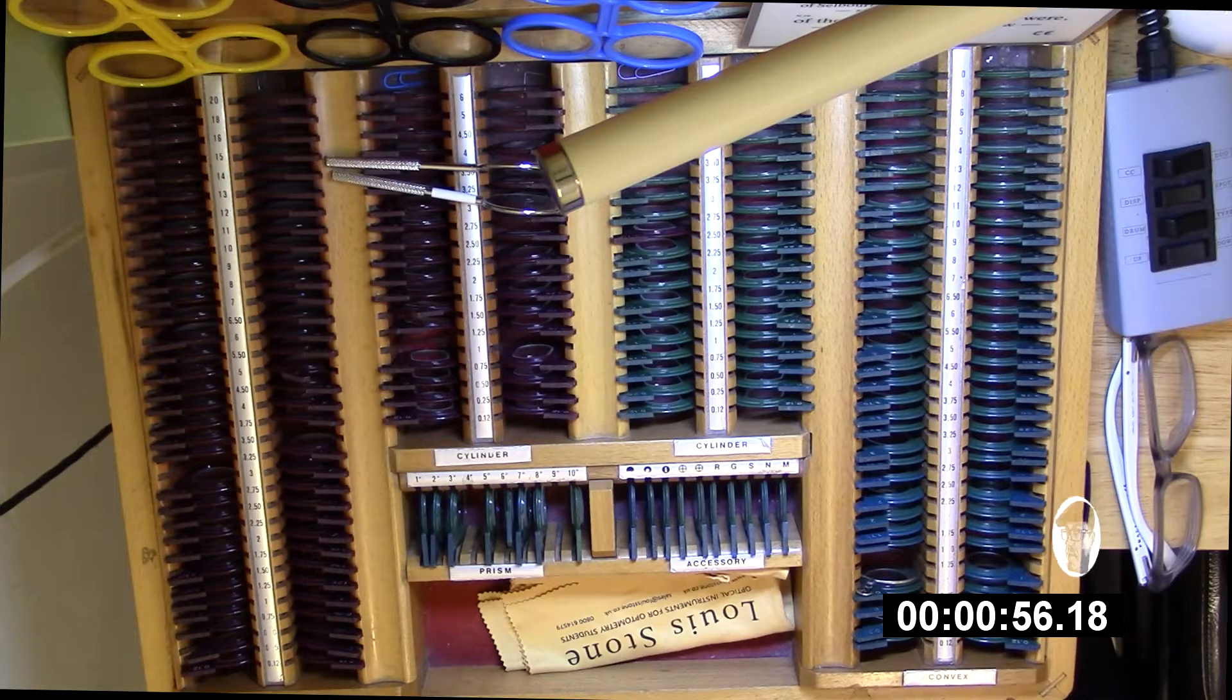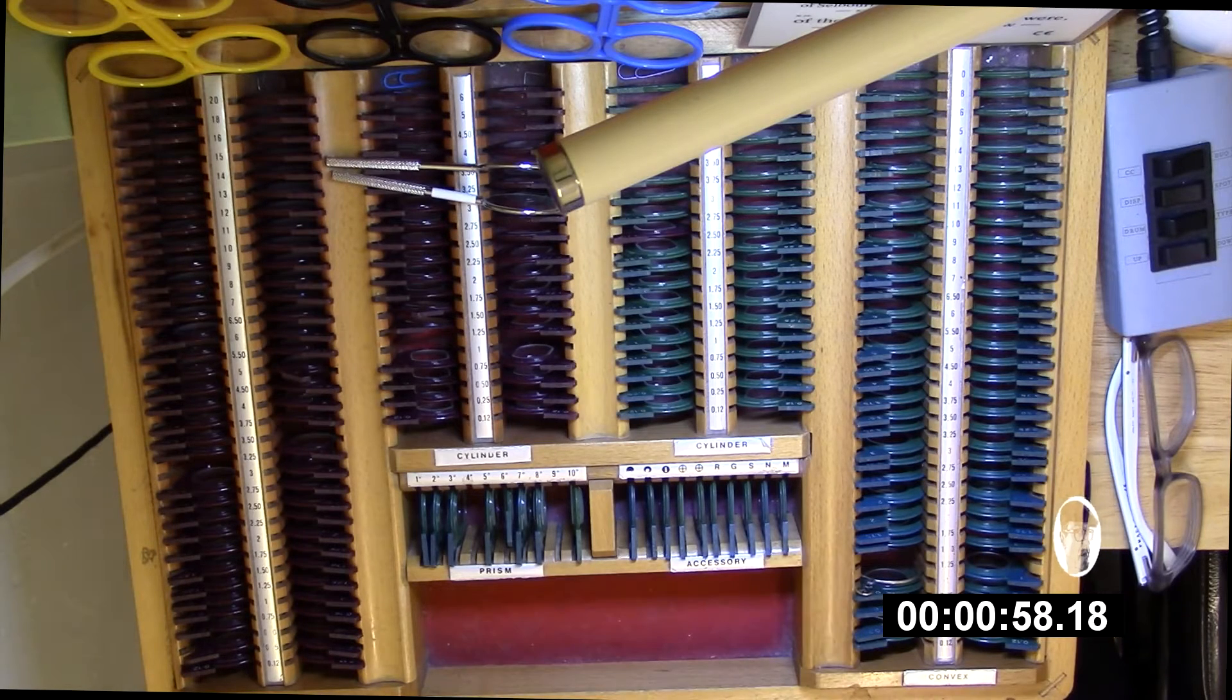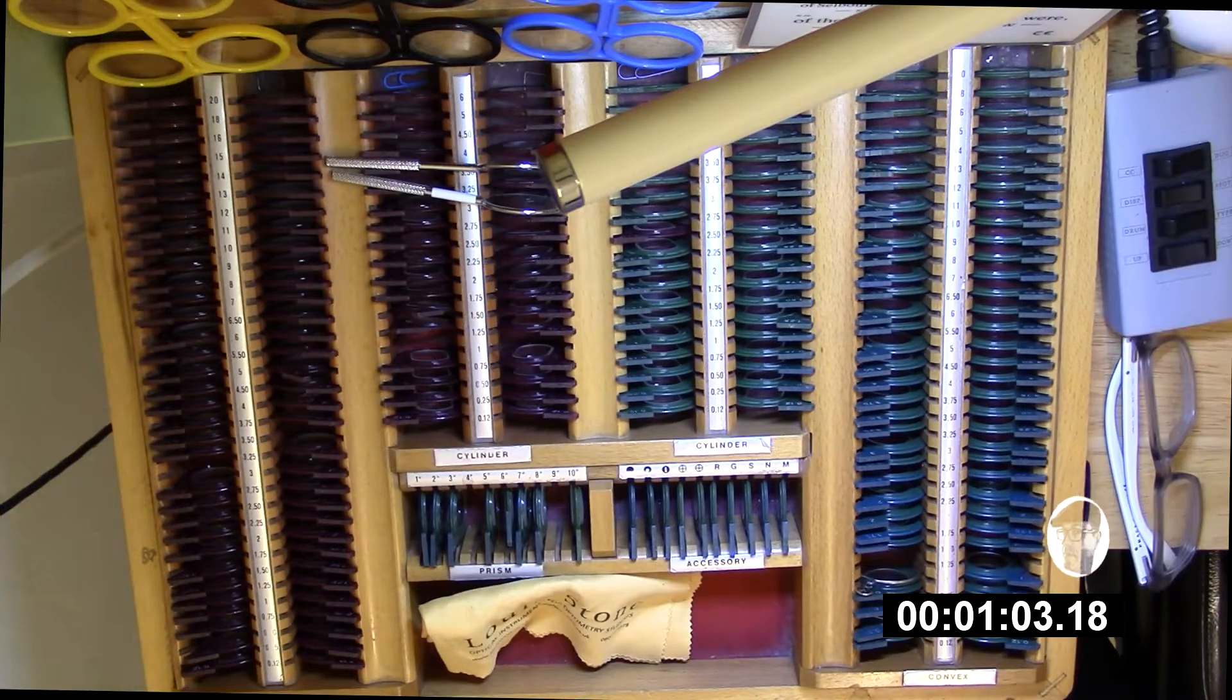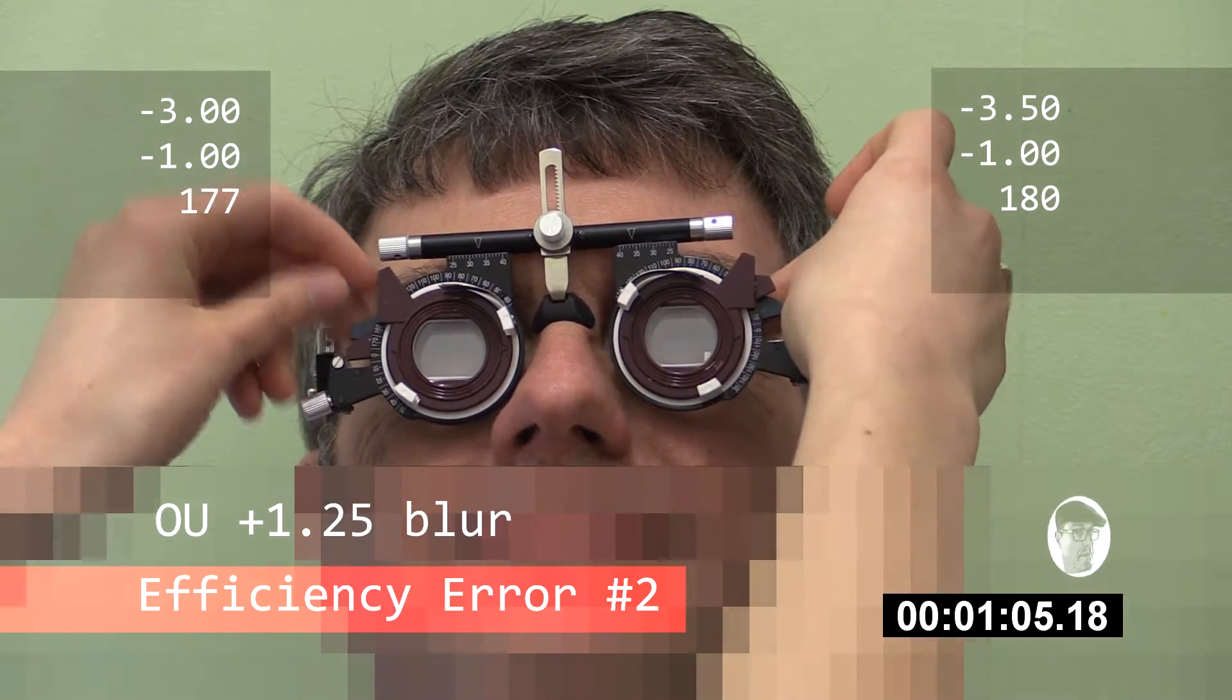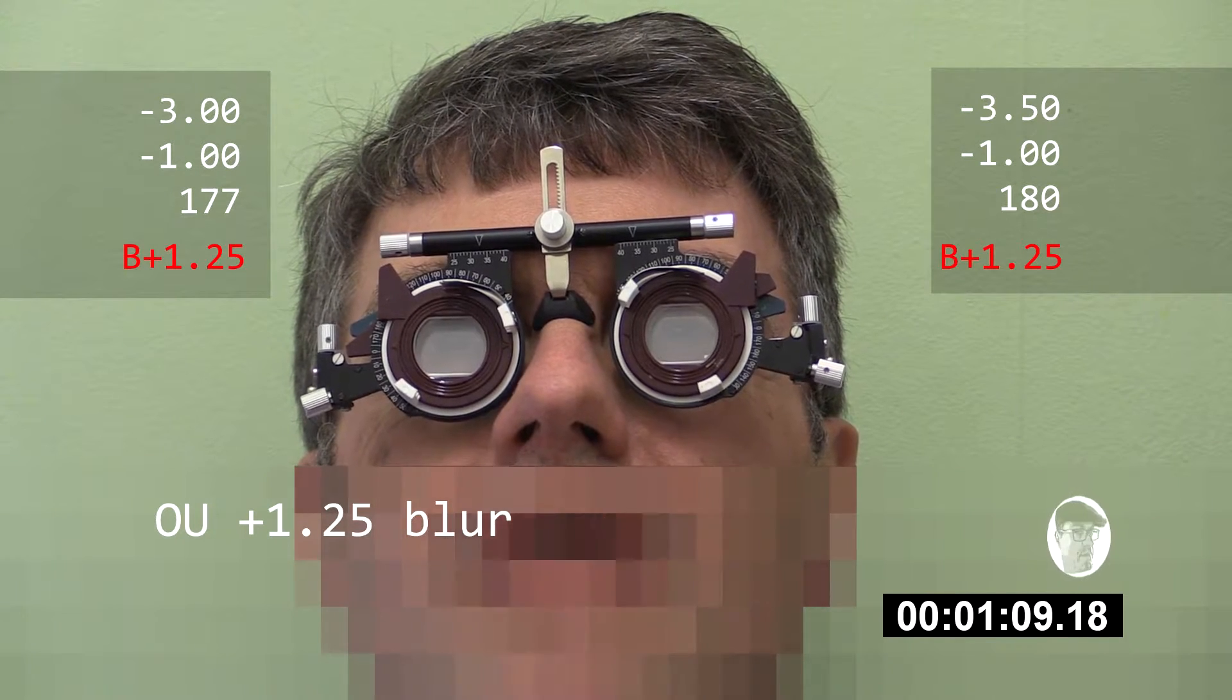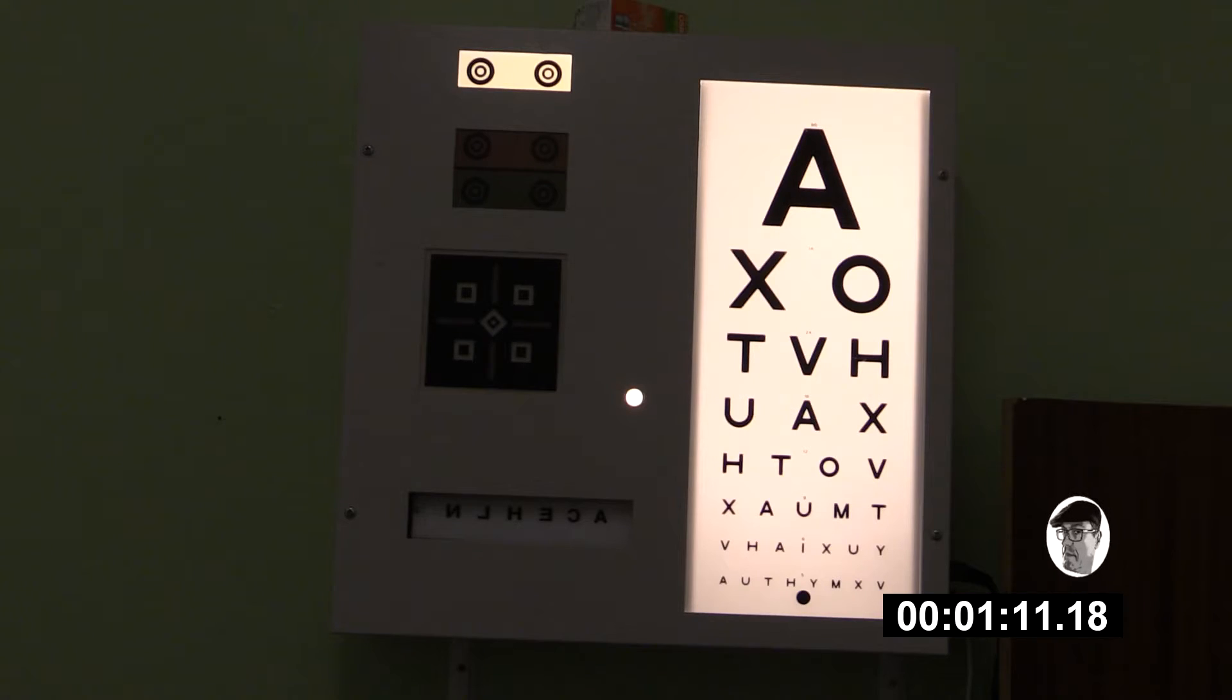And this time I'll attempt to do my binocular balance, so you can see the difference between the two. So we're going to pop those in place there. What's the smallest you can see now? Well, maybe V, O, T, H, maybe T, M, U, A, X, that's all.